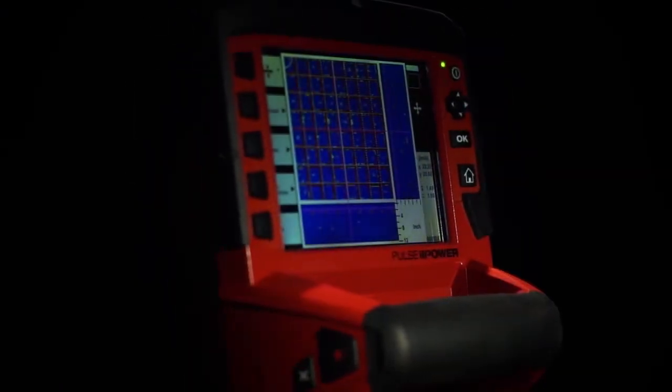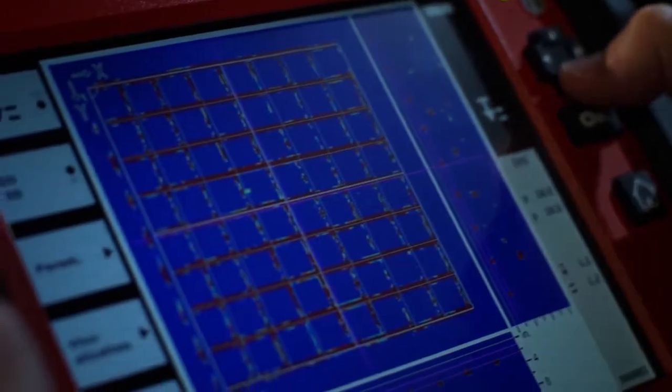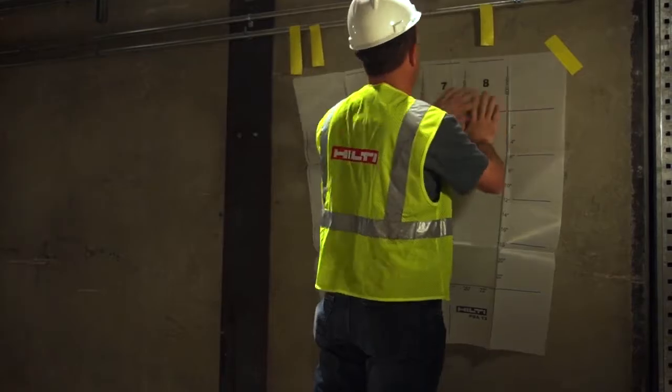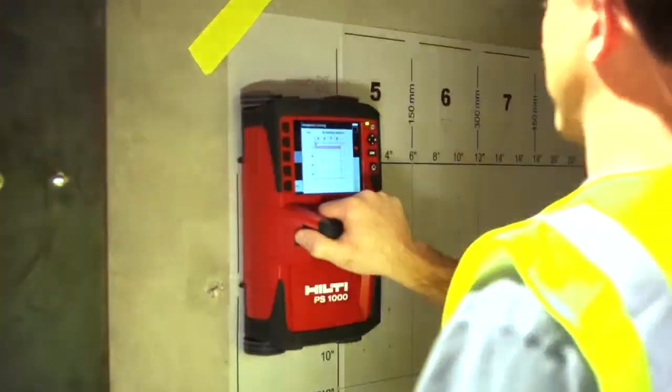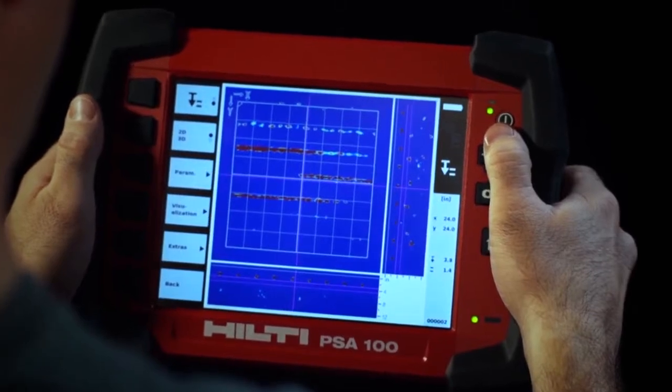For a more detailed look, the image scan function shows objects inside the concrete in both 2D or 3D. Simply place the grid on the area to be scanned, follow the grid with the scanner, and then view the image on the monitor to determine where to drill, cut, or core.